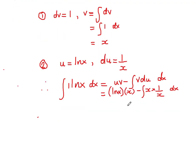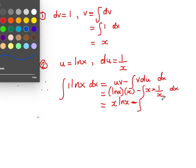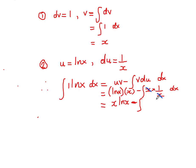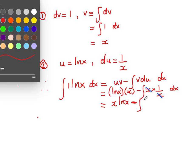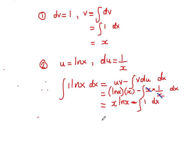Now that we have done the substitution, we simplify and integrate. ln(x)·x can be re-expressed as x·ln(x) — the order of multiplication does not matter, but this is more aesthetic. Minus the integral of x multiplied by 1 over x: here x will cancel with itself, so we are essentially left with just the integral of 1 with respect to x.